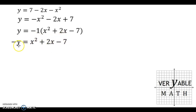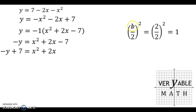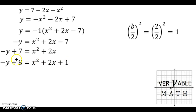We need to take our c value and move it to the other side, so we're going to add 7 to both sides. Once we add 7 to both sides, we can determine our new c value by taking b over 2 and squaring it. In this case b is 2, so 2 divided by 2 squared is just 1. That means we're going to add 1 to both sides. The right side now becomes a perfect square trinomial. On the left-hand side, we added 1 to the 7, becoming 8, but we'll take care of that later by solving for y.